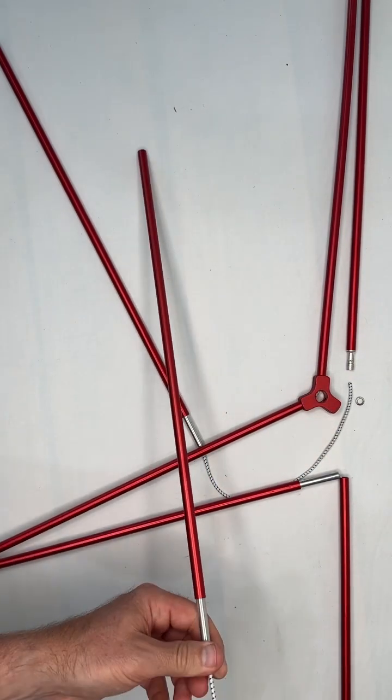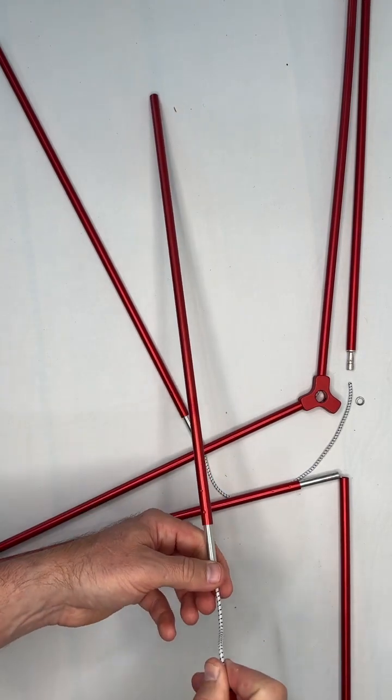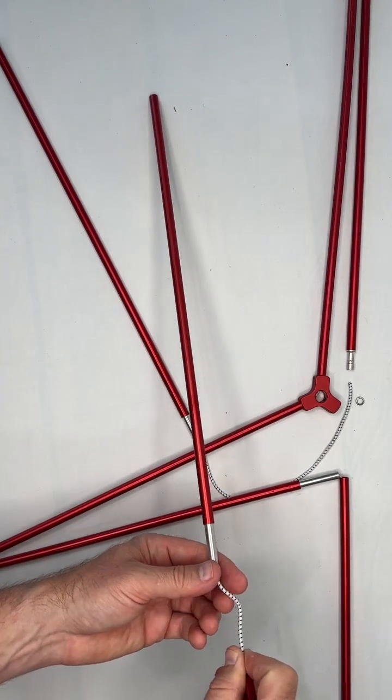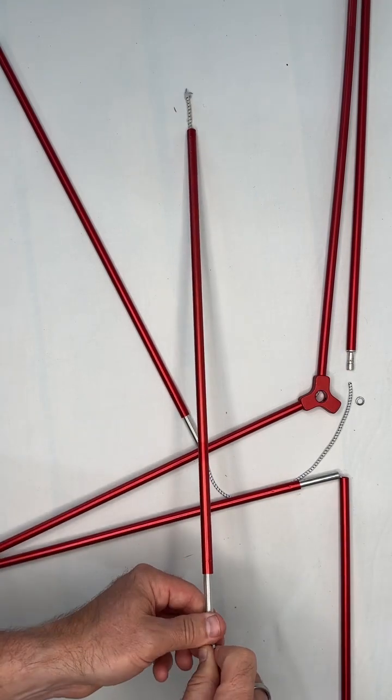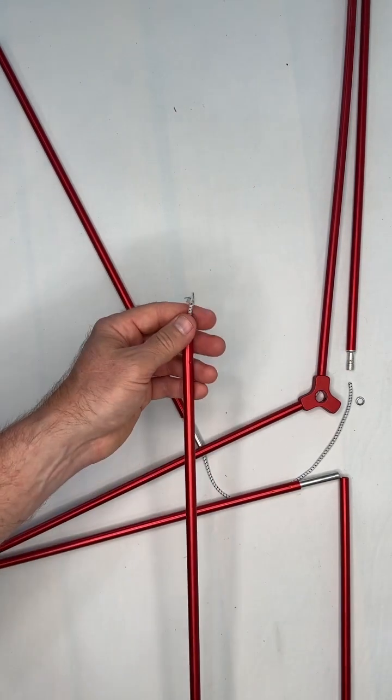Now we're just going to pull this bungee, the shock cord, through here. Keep pulling it as I'm pinching on it so it doesn't keep going back. Pinch, push, and now it just came through on this other side.